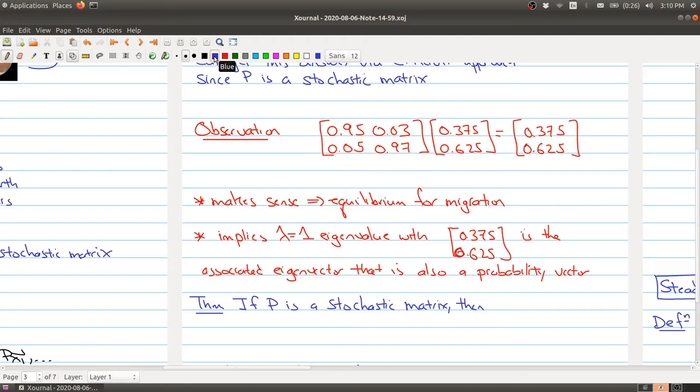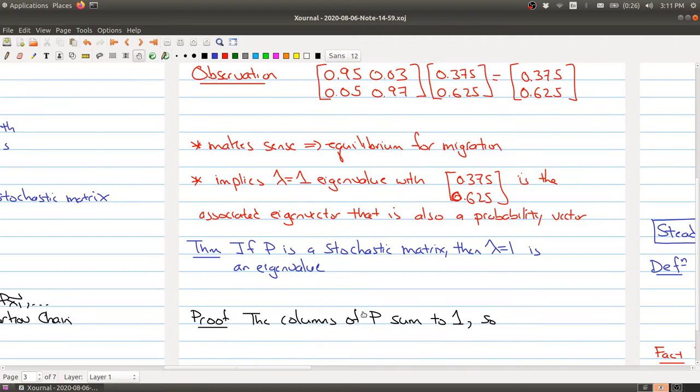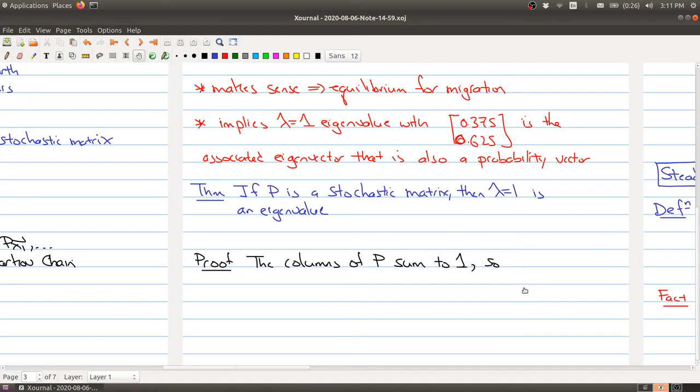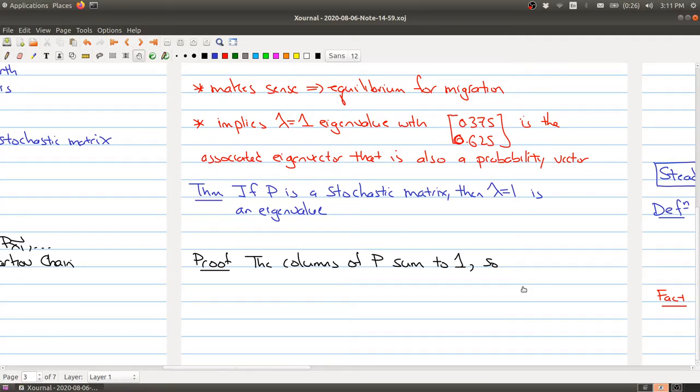It turns out this is actually a property of stochastic matrices. If P is a stochastic matrix, then lambda equals one is an eigenvalue. This is one of the few places where there's a difference between the fifth and sixth edition—the sixth edition contains a proof but the fifth doesn't. So I'm going to go through the proof. First, because P is a stochastic matrix, each column of P sums to one.